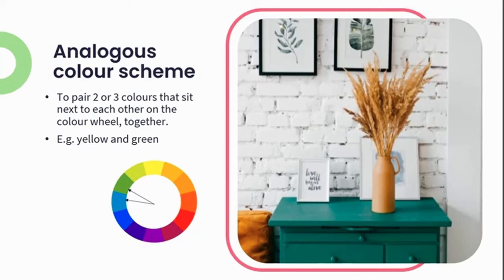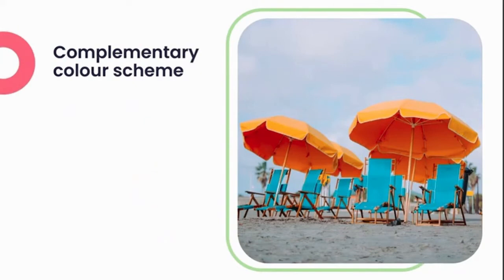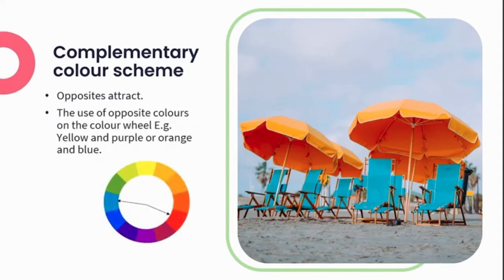Next, we have the analogous color scheme, which creates a warm feel and adds interest, touching on the principles of contrast. This simply means pairing two or three colors that sit next to each other on the color wheel — for example, purple, blue, and green, or yellow, blue, and green. Then we have our complementary color scheme — using opposite colors on the color wheel, such as yellow and purple or orange and blue. Choosing two complementary colors creates an energizing, high-contrasting color scheme within a space.